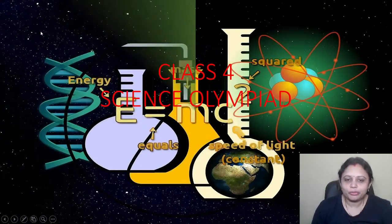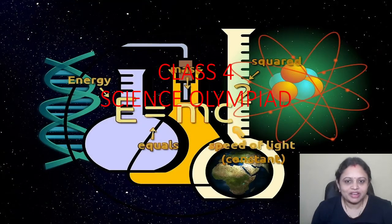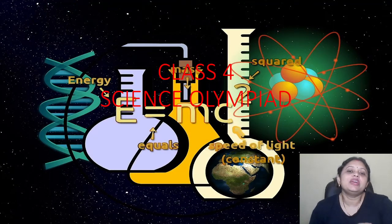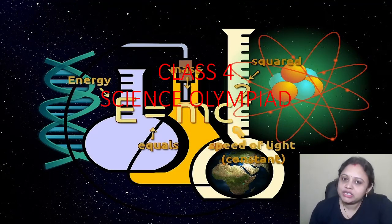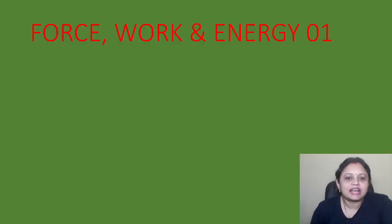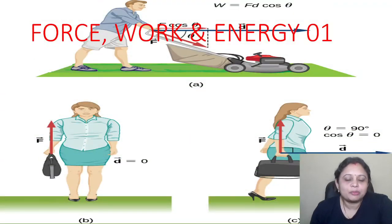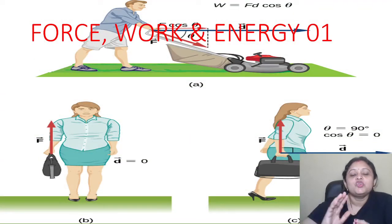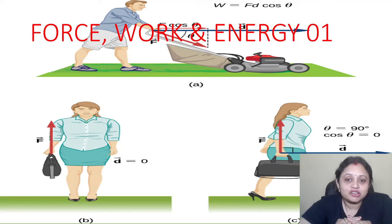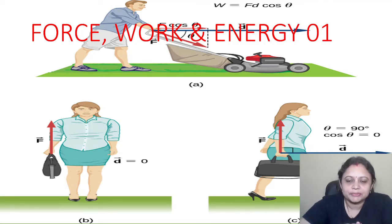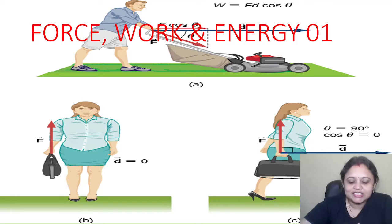Hi kids, how are you all? I hope you all must be fine. So today we are going to read about Class 4 Science Olympiad. Which chapter are we going to read? We are going to start a new chapter — Force, Work and Energy. So are you all ready? Let's get started.